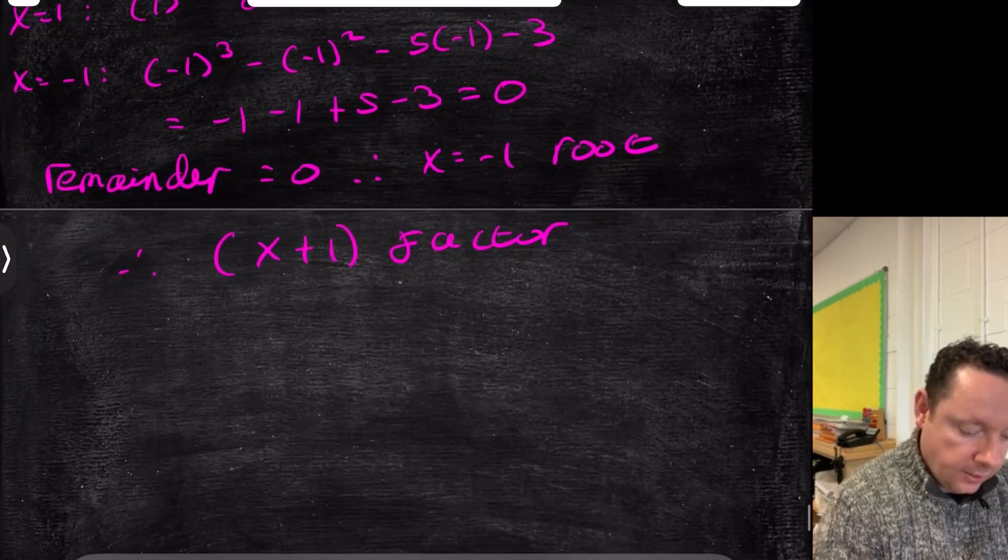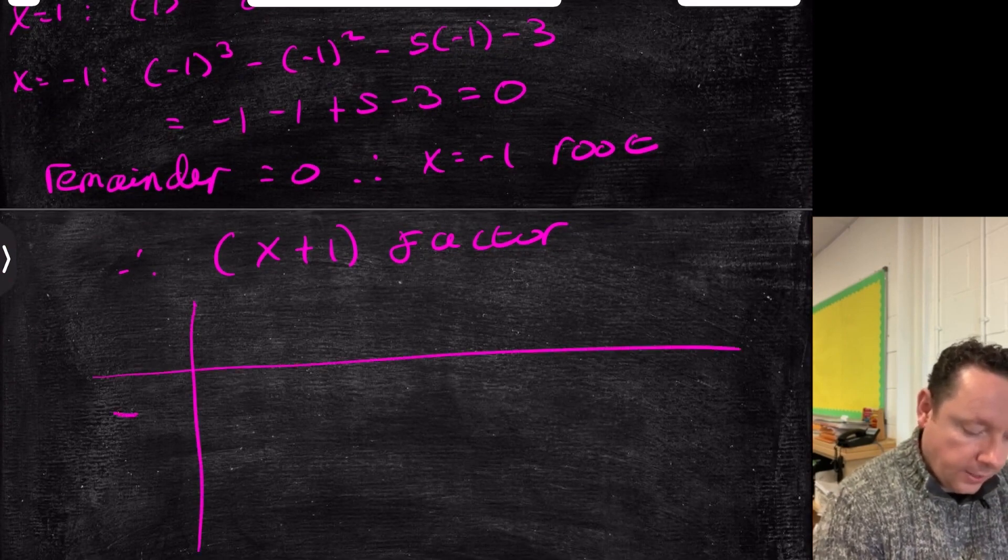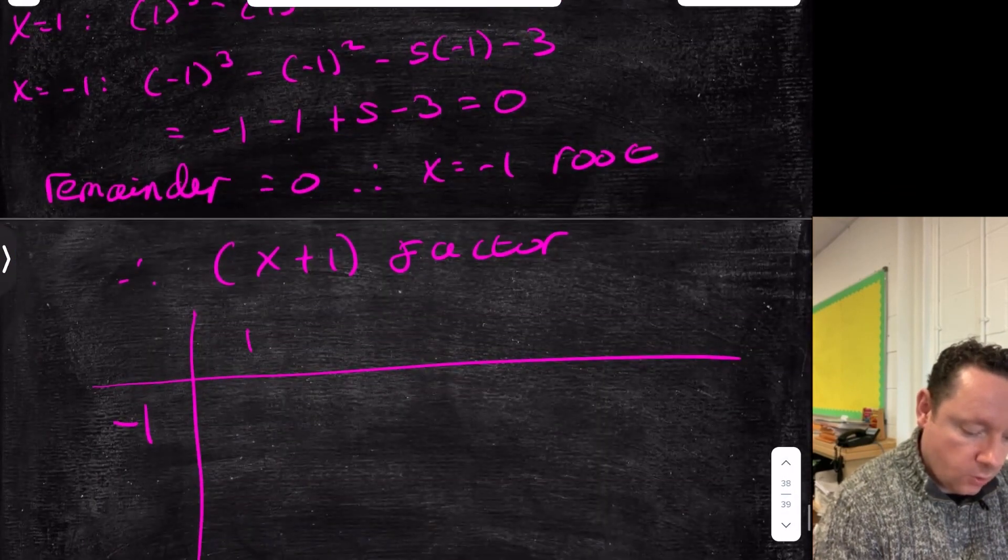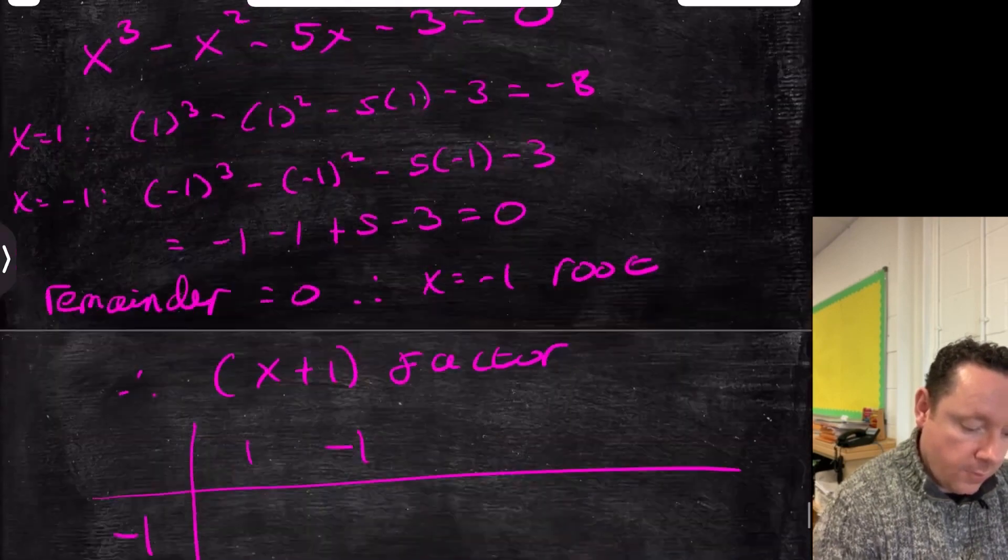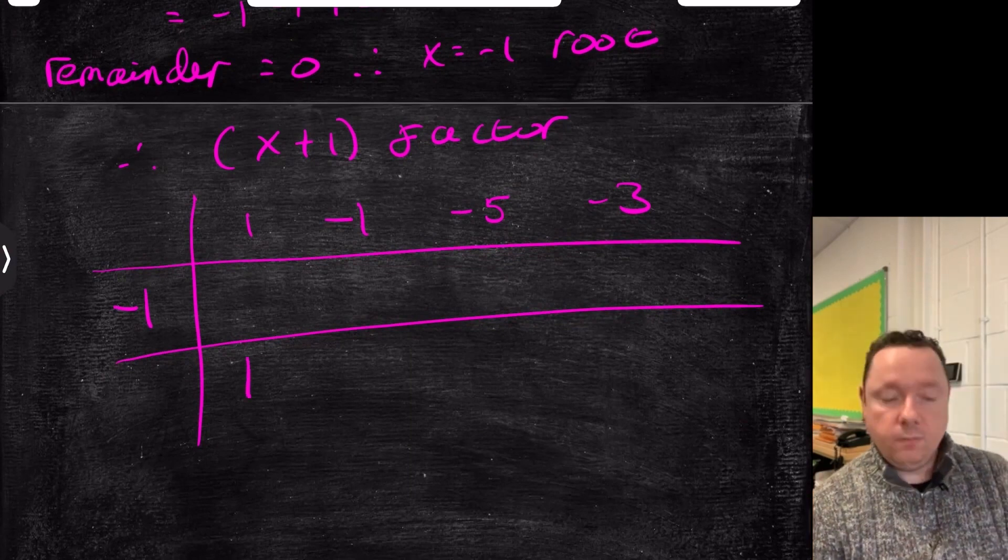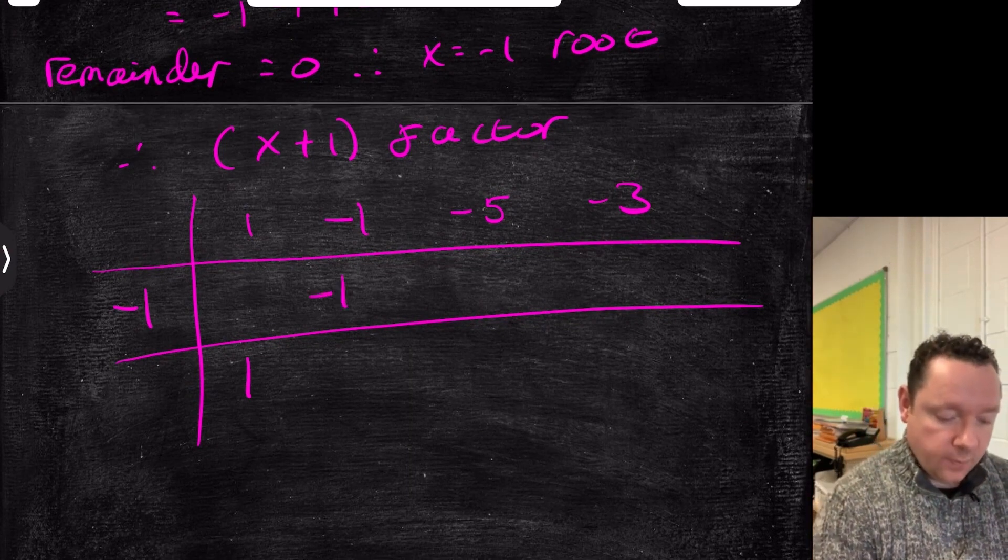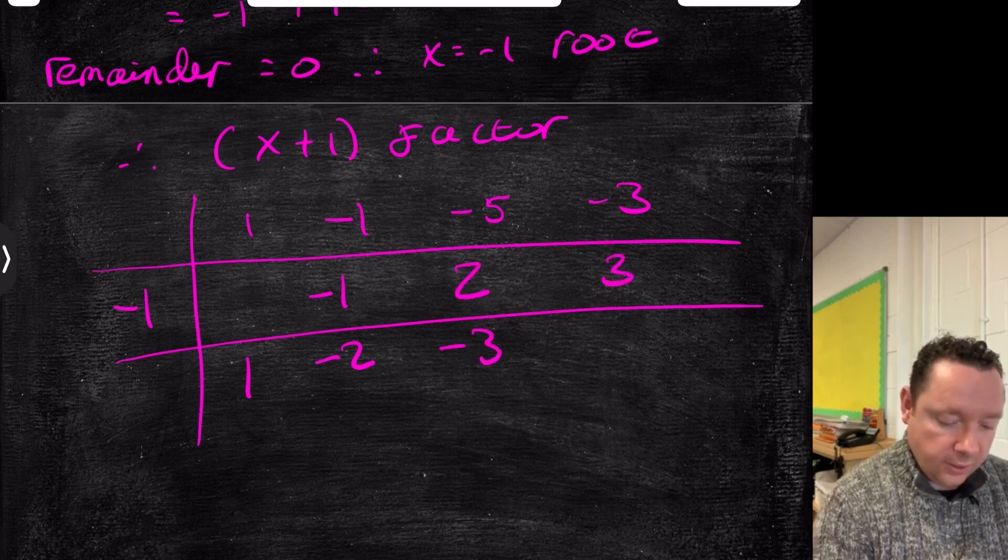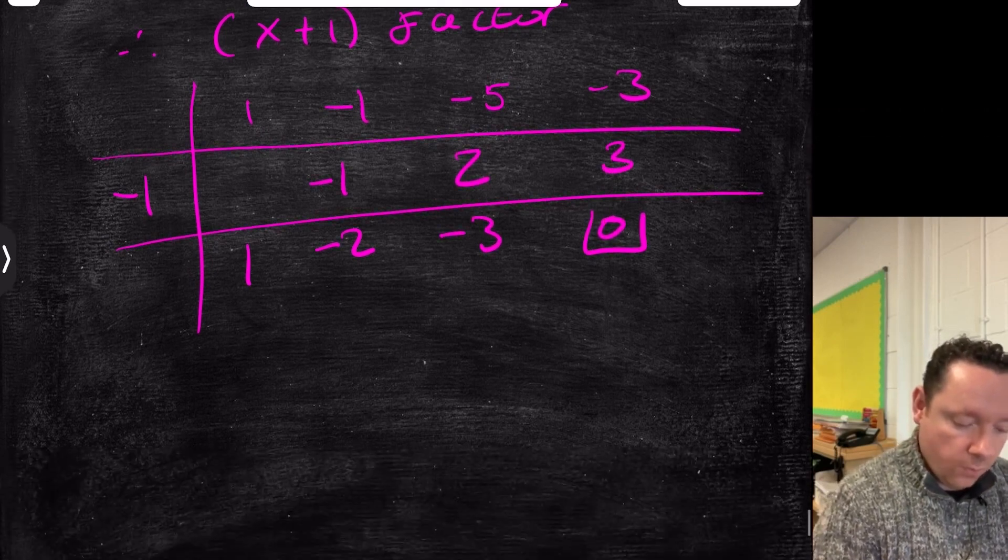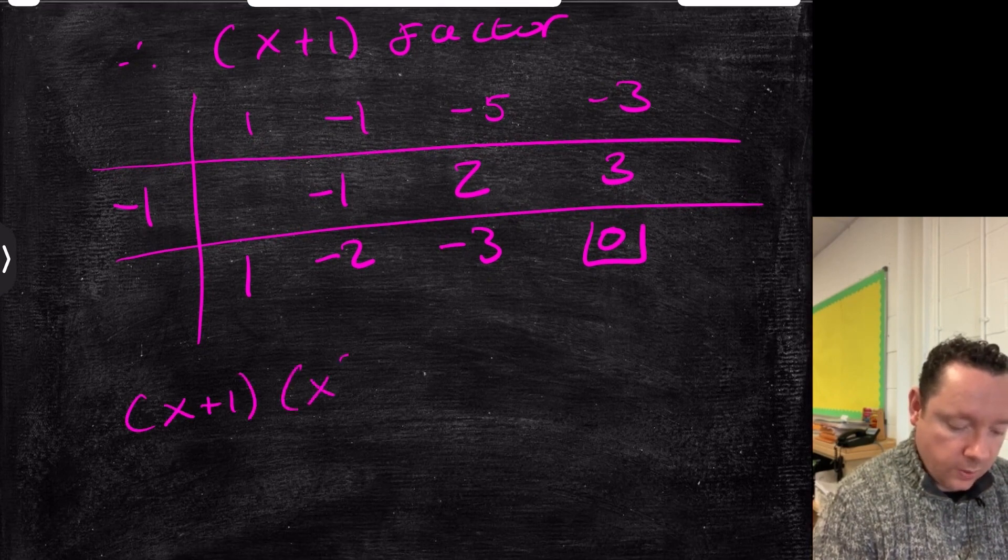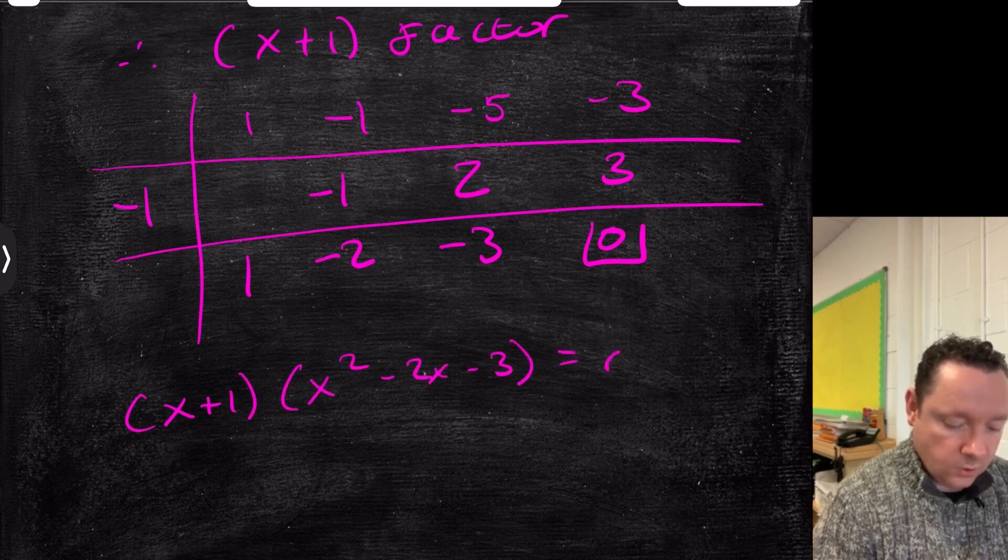So now we can do our synthetic division as normal. Minus 1 was a root, and then we've got 1x cubed, minus 1x squared, minus 5, minus 3. Drop the 1 down, then 1 times minus 1 is minus 1, take away gives you minus 2, times gives you 2, take away gives you minus 3, times gives you 3, and you get 0. And therefore we've got x plus 1 times x squared minus 2x minus 3 equals 0.